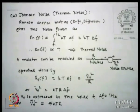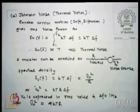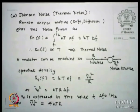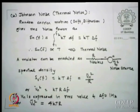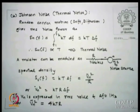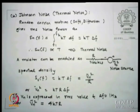The second noise of interest is Johnson noise, also popularly known as thermal noise. Any random carrier motion, whether due to drift or diffusion, gives an RMS noise power. The noise spectral power S_N(F), taken from frequency F1 to F2, gives a spectral density of KT·ΔF. Since S_N(F) is proportional to T, this is thermally dependent noise — the larger the temperature, the larger the noise component.